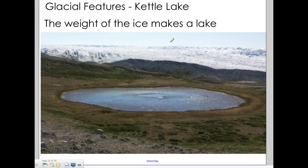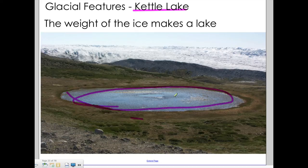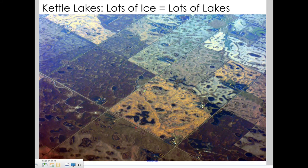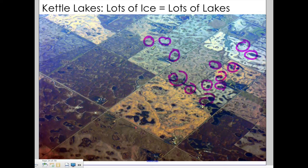Another feature you need to know about is the kettle lake. A kettle lake forms when a depression — a big hole — gets pushed into the ground by the weight of the ice, and then when the ice melts, it fills up that hole with water, creating a lake. Every one of the hundreds of kettle lakes in this photo was a different area where ice piled up, made a depression in the ground, and then filled with rainwater when the ice melted.